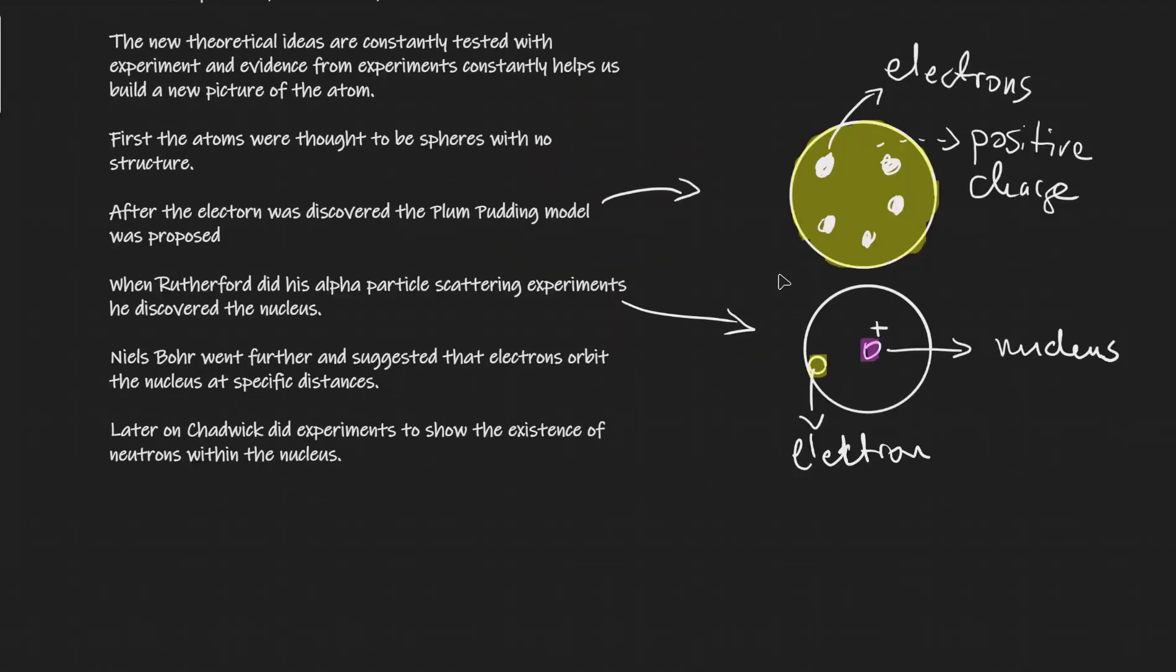Additionally, Niels Bohr went further after that and suggested that electrons orbit at specific distances. He actually calculated those. And further on later, Chadwick did some experiments to show that the nucleus itself was not an indivisible entity and it consisted of another particle as well which was known as neutrons and also protons.